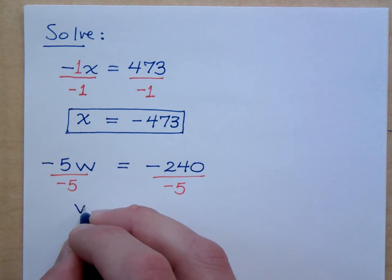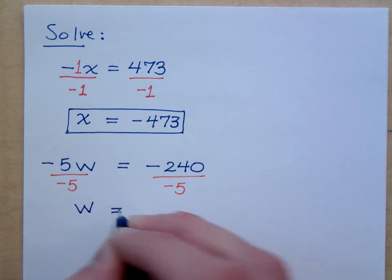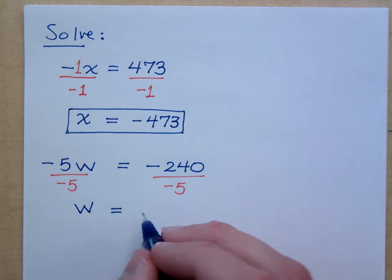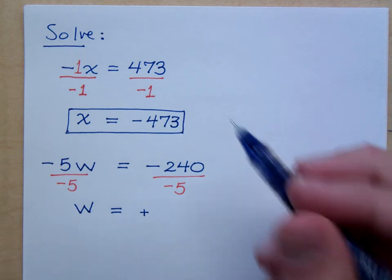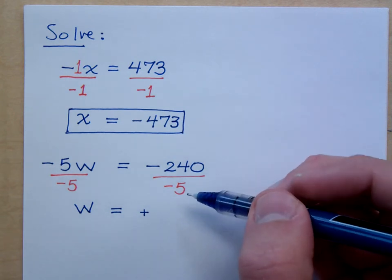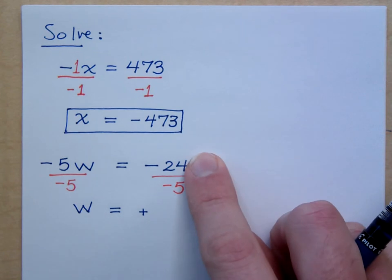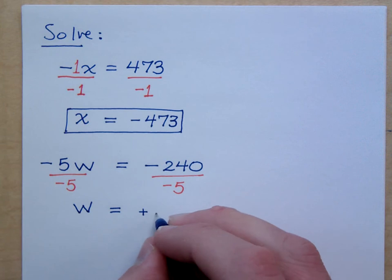So this gives me a plain positive w equals, is it positive or negative on the right side? It's going to be a positive. Now what was the cool trick I said for dividing by 5? To divide by 5, multiply times 2. What's 24 times 2? 24 times 2 is 48.